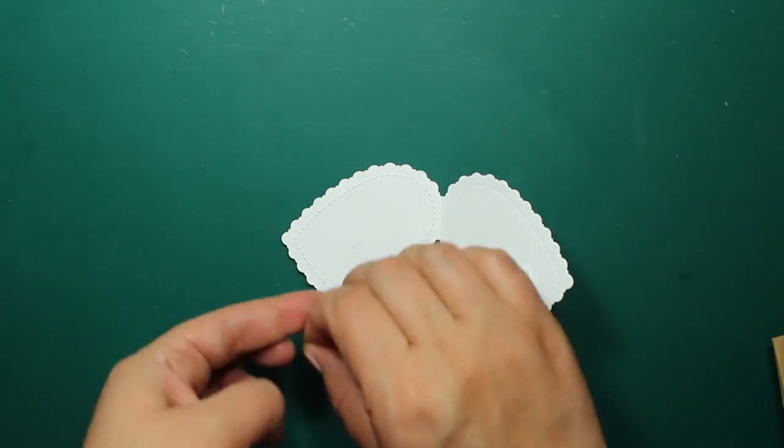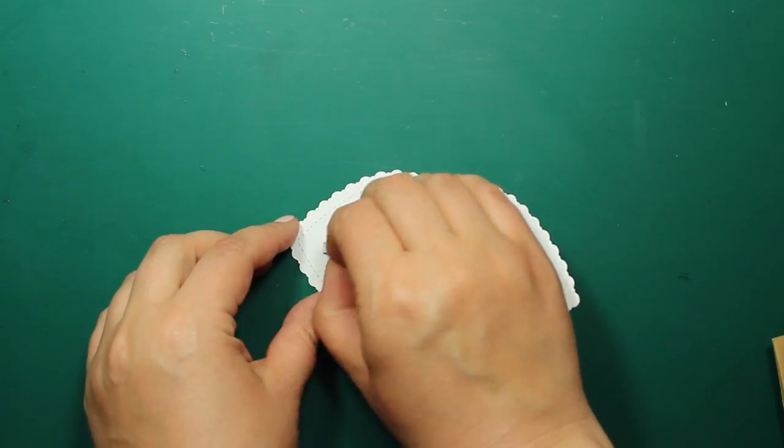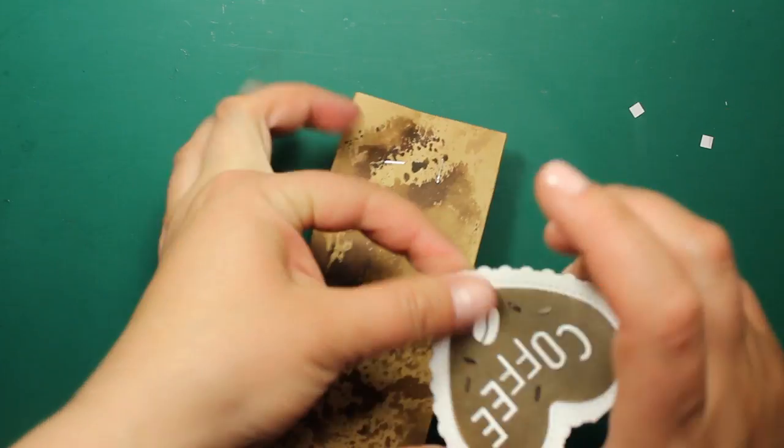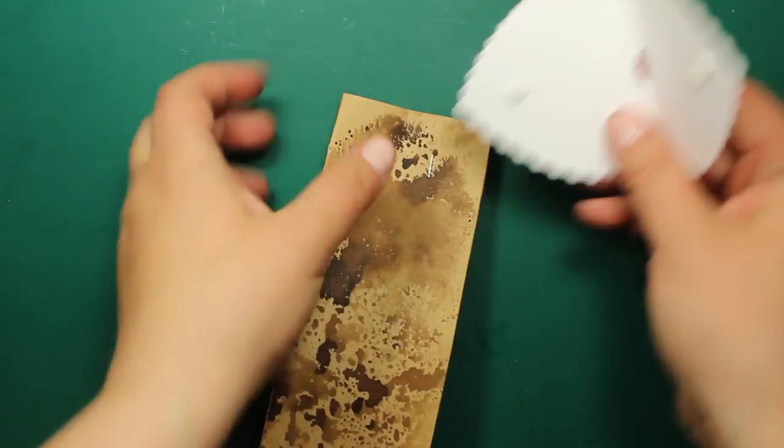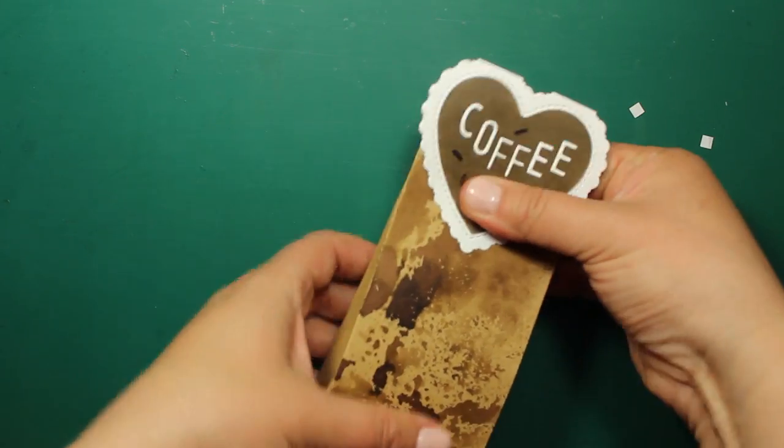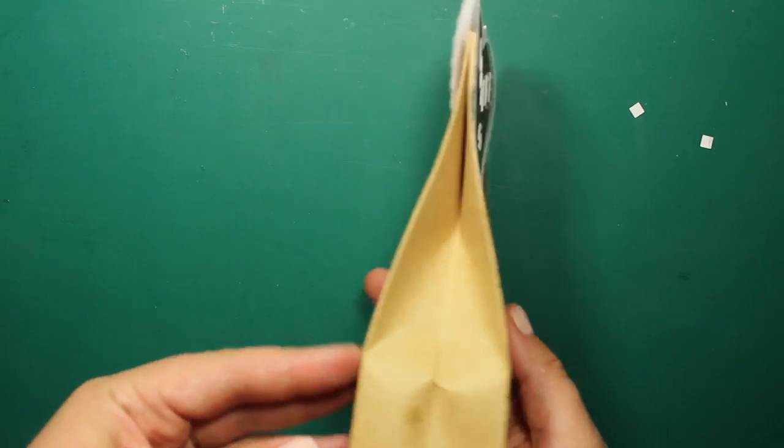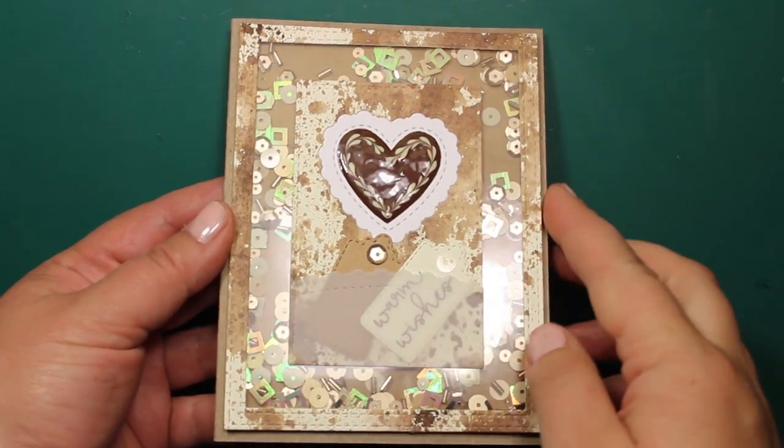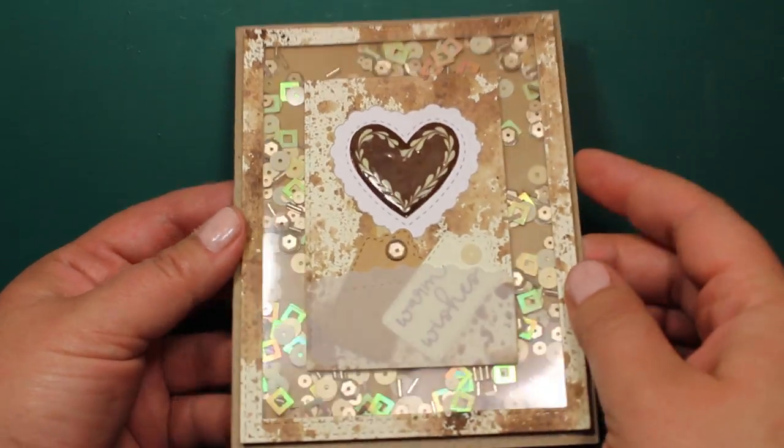Now I am sticking two foam squares to the topper and attaching it to the bag. This way it will be easy to take off even without tearing it. So here is what my finished gift set looks like.